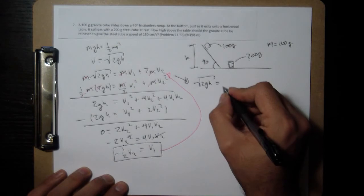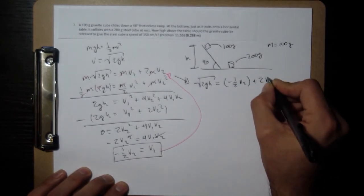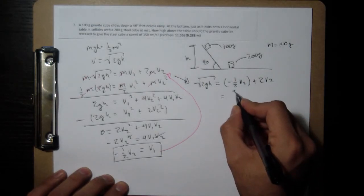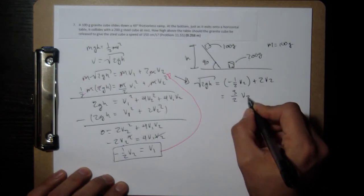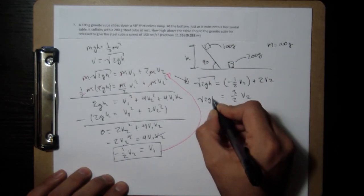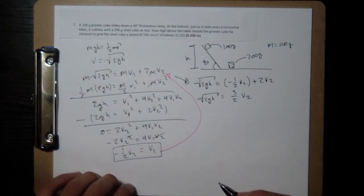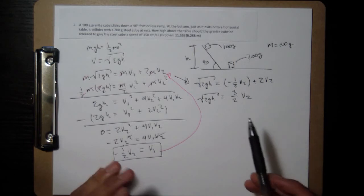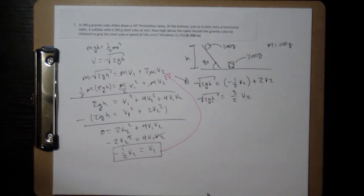If I write out that, square root of 2gh equals, v1 is getting substituted, so negative 1 half v2 plus 2v2. 2 minus 1 half is 3 halves. And then what we want is to know what the h is in order to make v2 equal to 150 centimeters per second. So I'm going to square both sides.